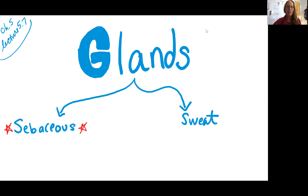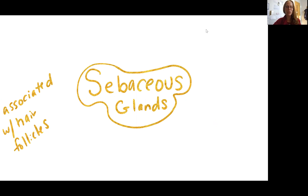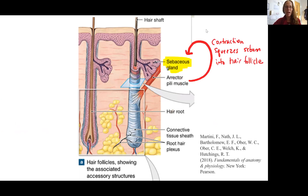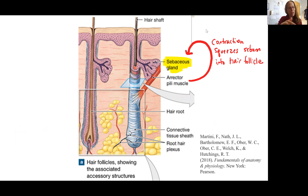First, the sebaceous glands are associated with hair follicles. We already saw it in our diagram here from the textbook where we have our sebaceous gland with our hair follicle, and then you have that erector pili muscle right beside. Remember, when the erector pili muscle contracts, it's going to squeeze that sebum into the hair follicle, and that can then lubricate the hair shaft as well as the stratum corneum.